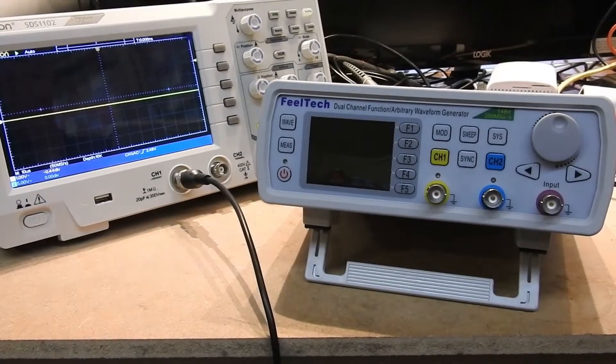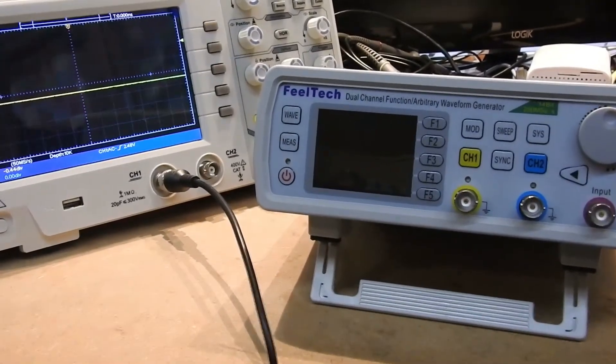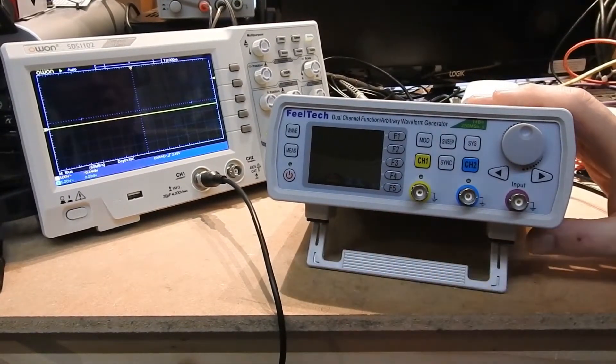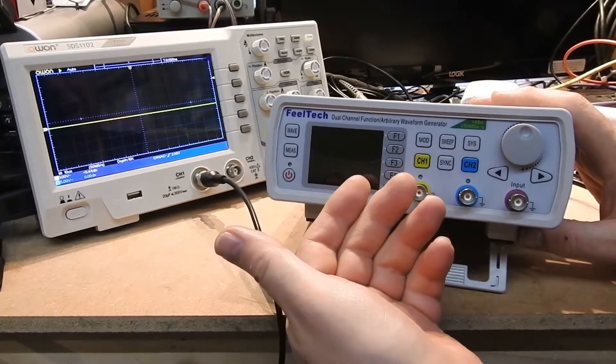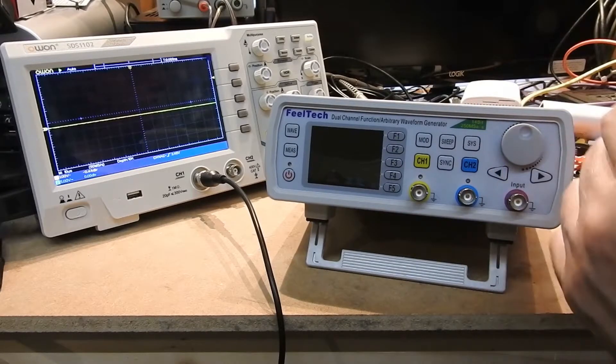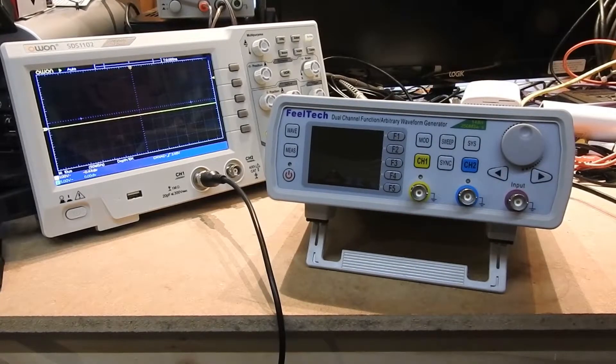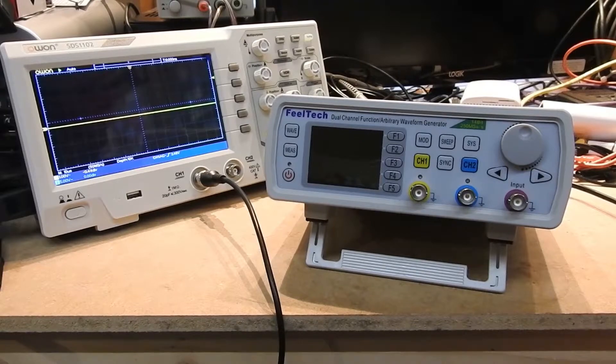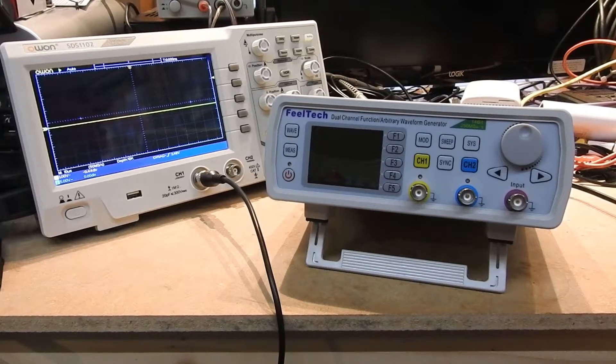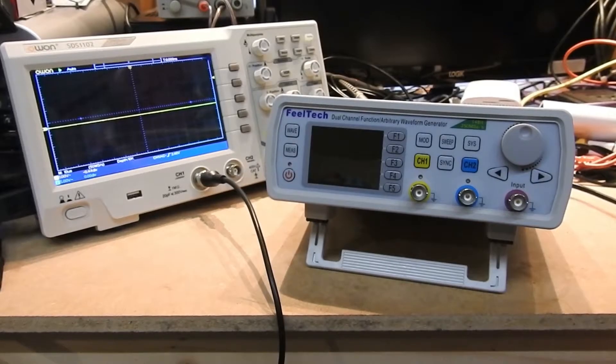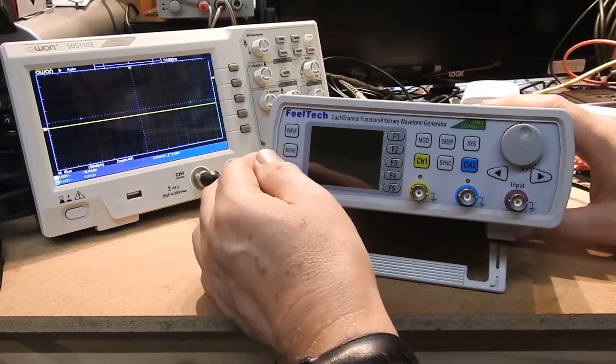Right, here we are, got the thing plugged into mains, got my handy Owon scope next to it. And as you can see, I've lifted the unit up—it has a little handle underneath for sitting on the bench. So there's a on the front you have an on-off switch, but that's just, you know, it's not a real on-off switch like on a phone I guess. The real on-off switch is around the back. So let's have a look around the back and see what we've got around there.